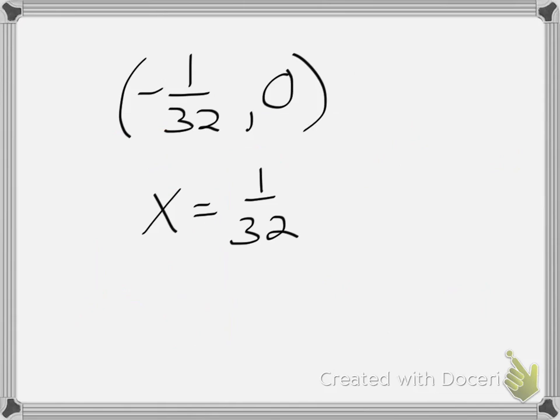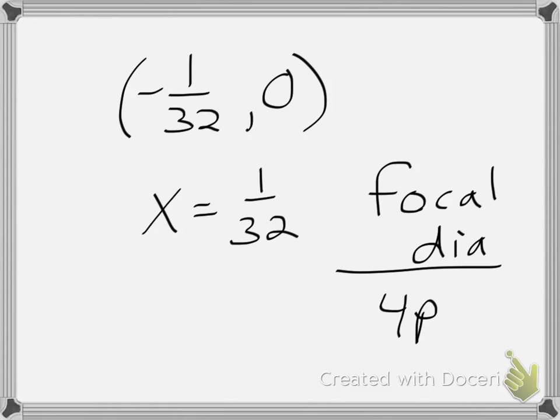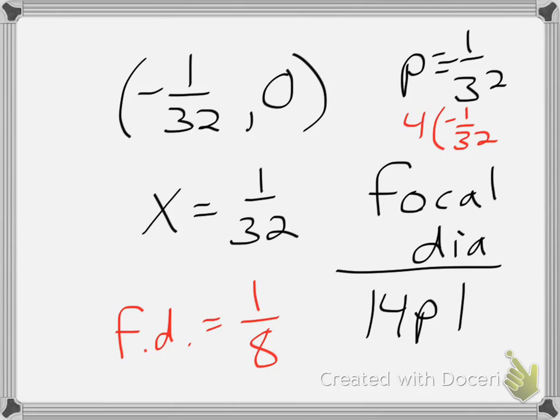Now, lastly, since I need to know the focal diameter, the focal diameter is always 4p. And since it's a distance, we take the absolute value. Since my p is negative 1 over 32 in this case, 4 times that gives me a focal diameter of 1 eighth. And again, it's positive because it's a distance. So again, I took 4 times my p value. I took the absolute value, which will give me, after I simplify, 1 eighth.